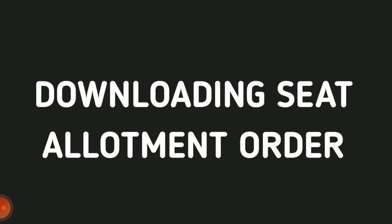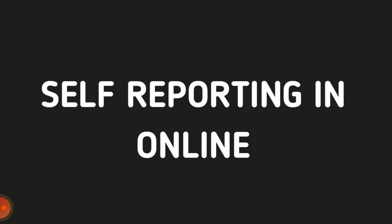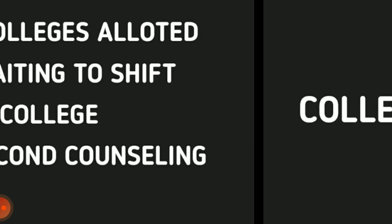After downloading the seat allotment order, you have to complete self-reporting online. You accept that college by clicking the button online — confirming that you are ready to join that particular college. You will have approximately five days or one week to complete this step. If you do not report to the college within that time, the seat will be cancelled.